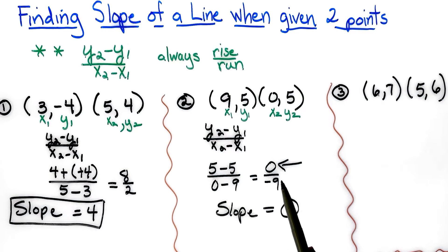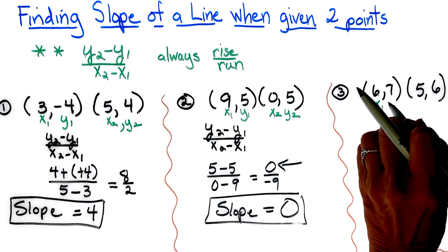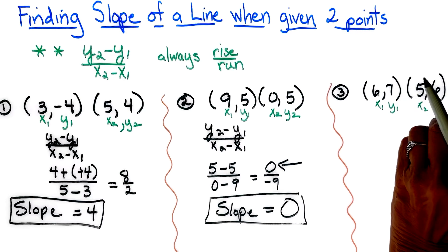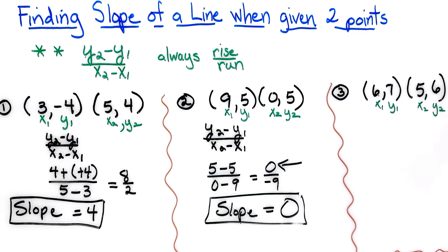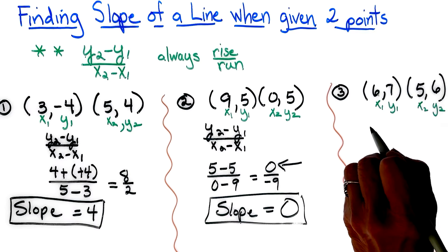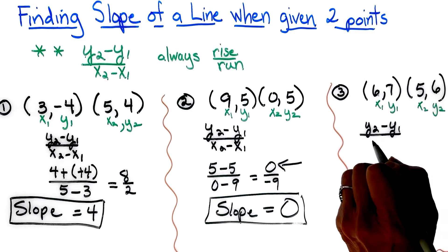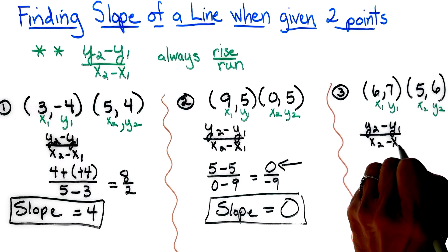That is only if the 0 is in the numerator. For question number 3, again I'm going to label x1, y1, x2, y2, and copy the formula — of course — y2 minus y1 over x2 minus x1.